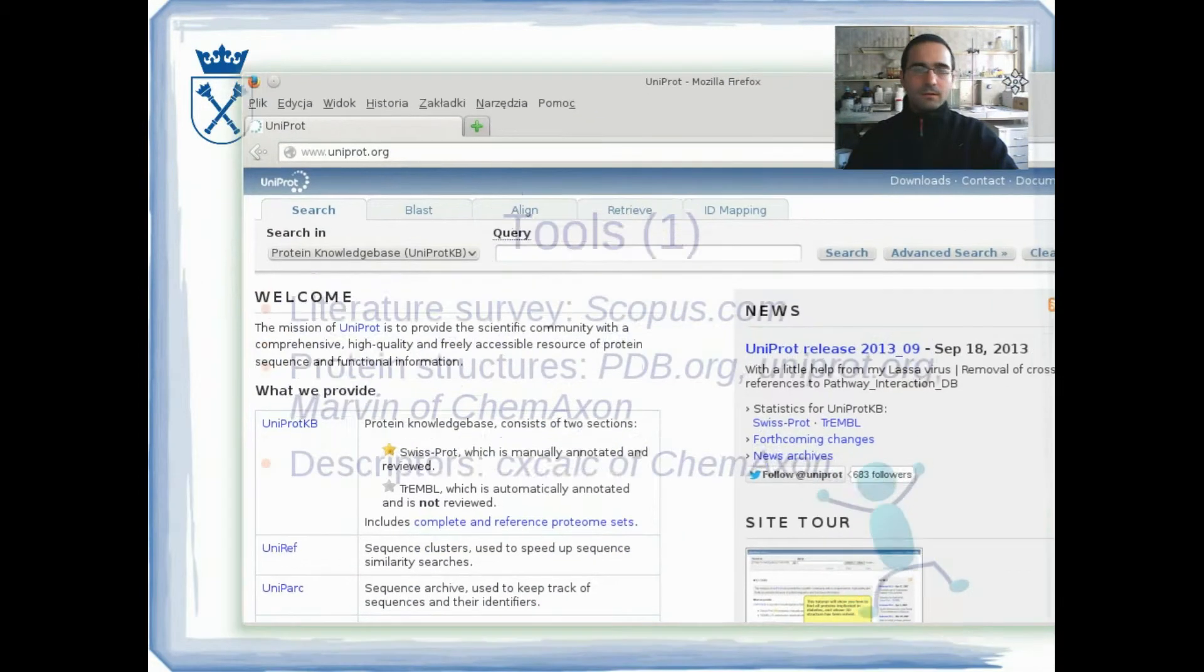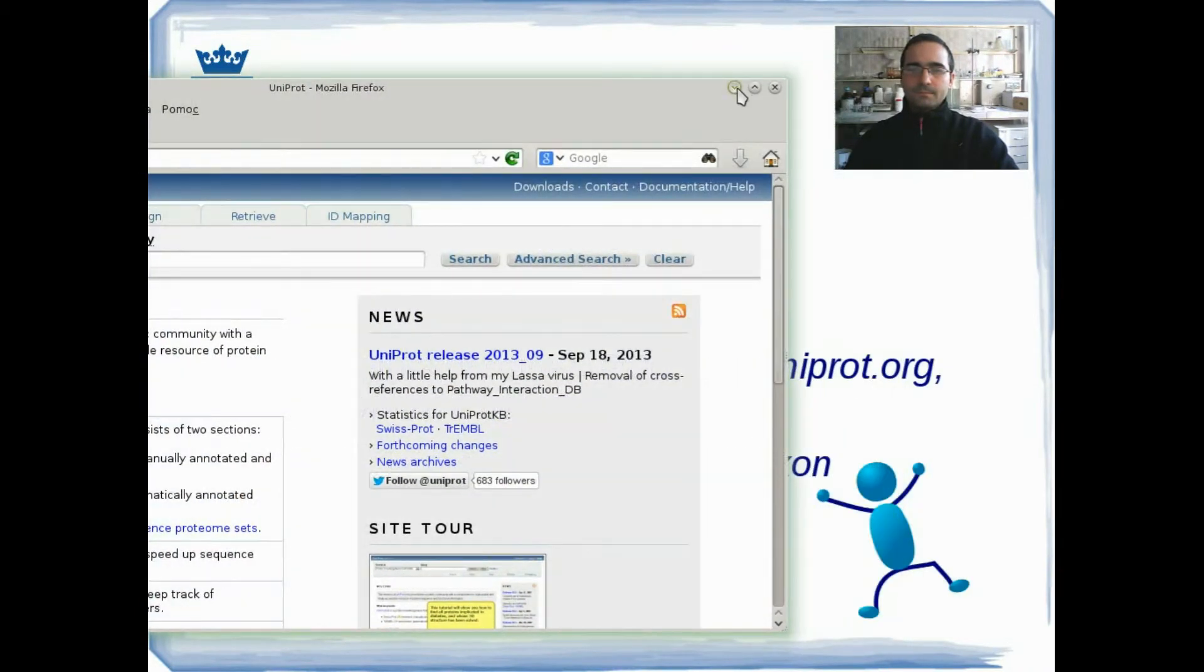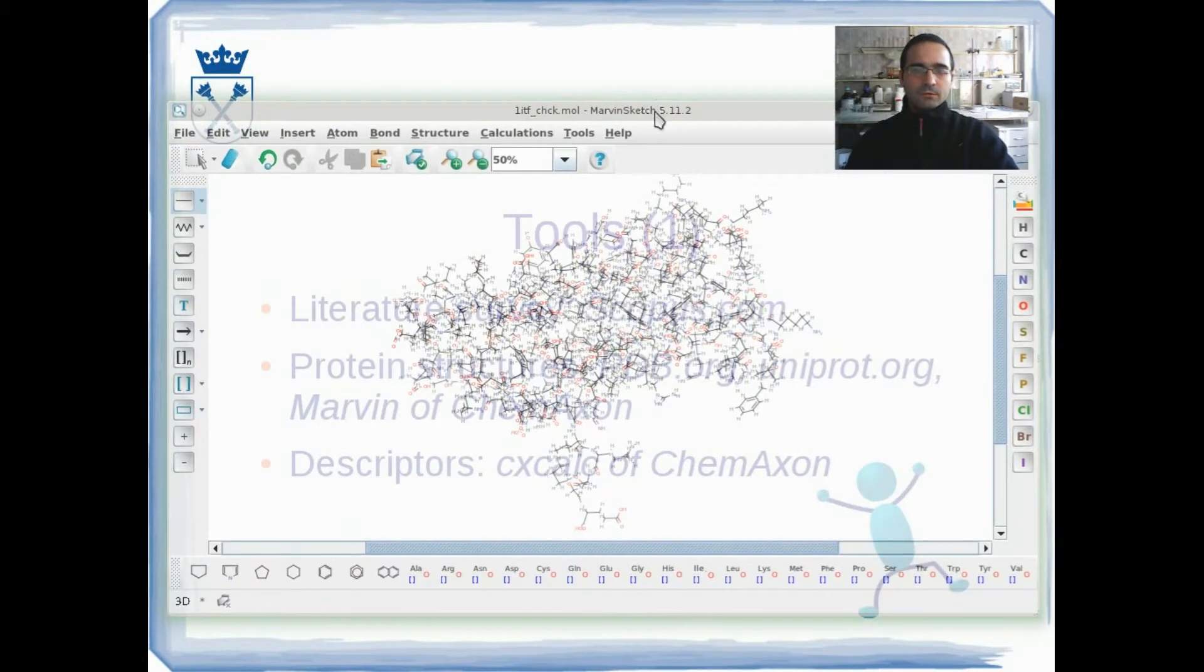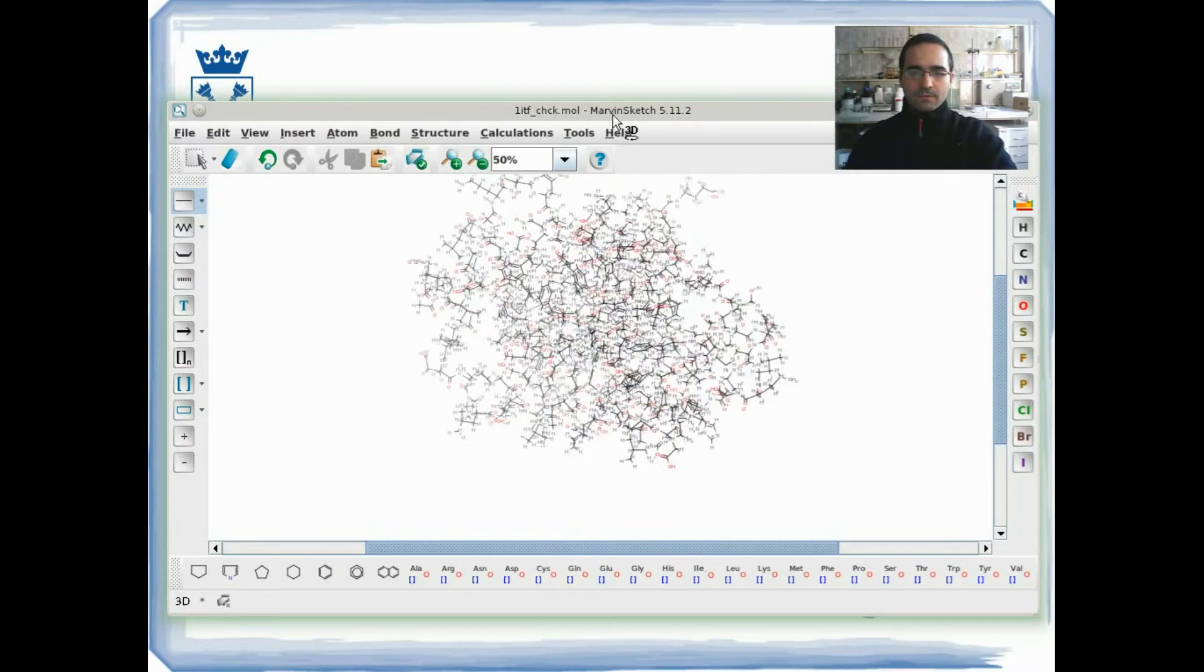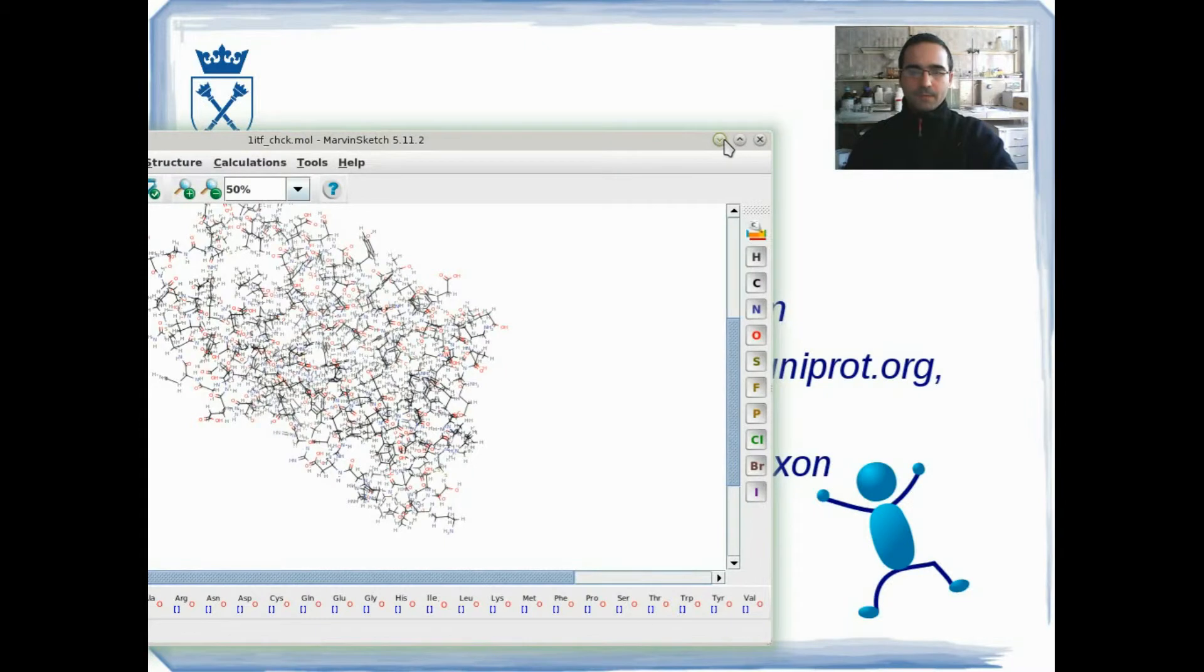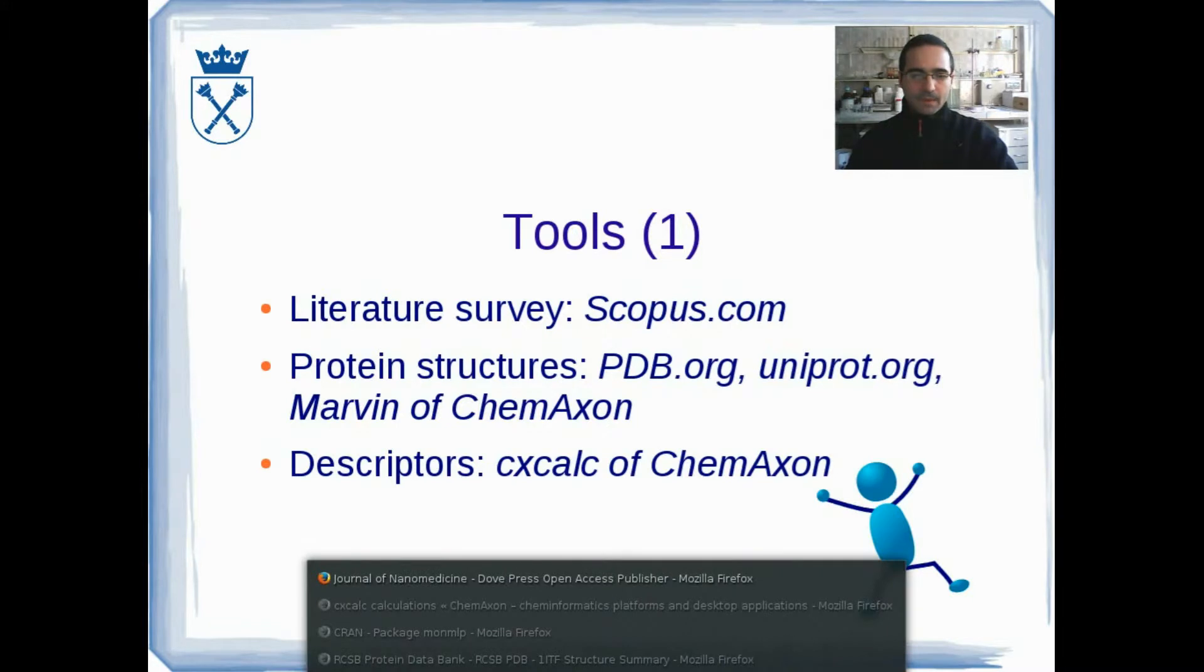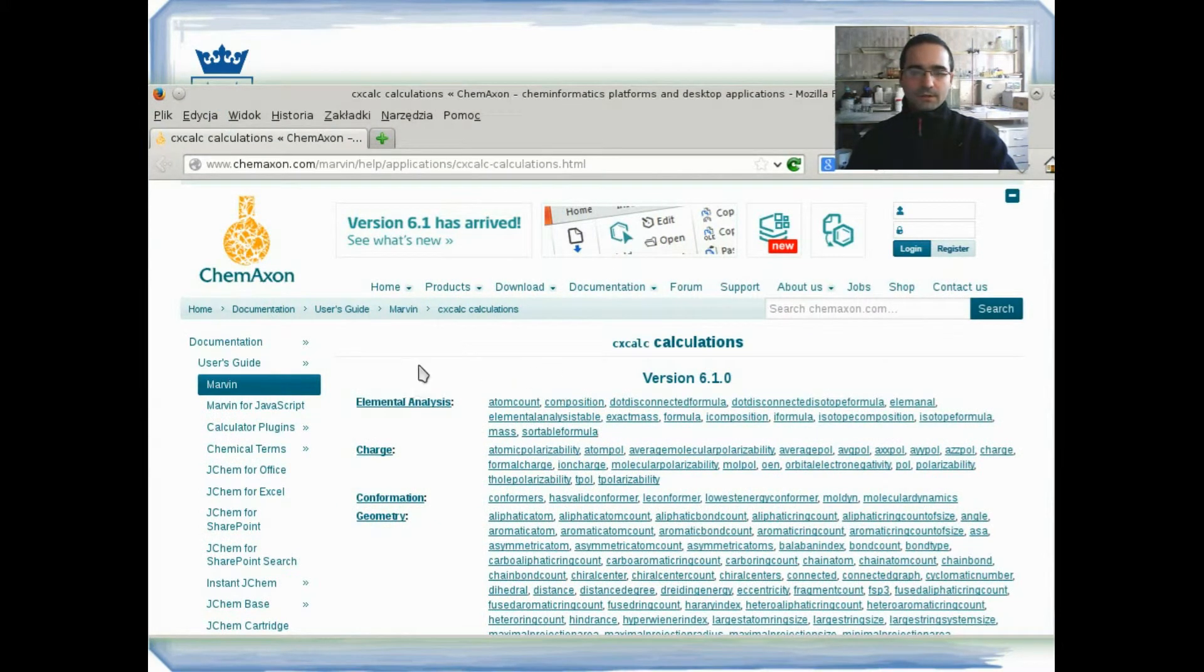and UniProt.org. Those structures were imported into ChemAxon's Marvin, and then chemical descriptors were calculated using ChemAxon's cxCalc.